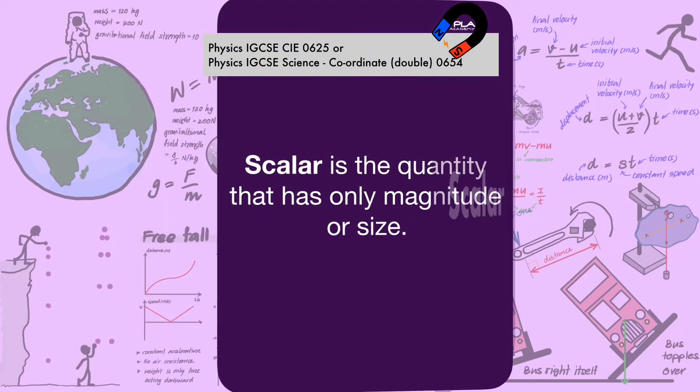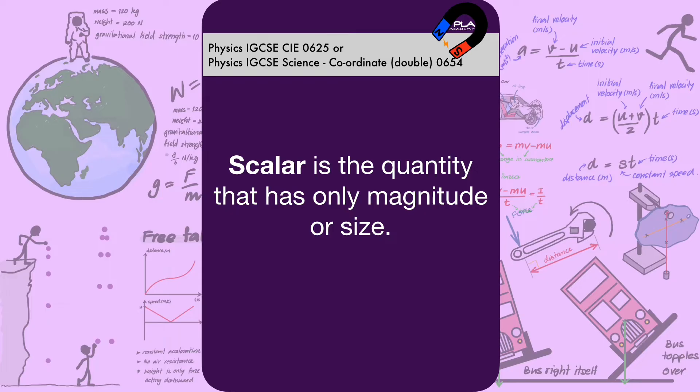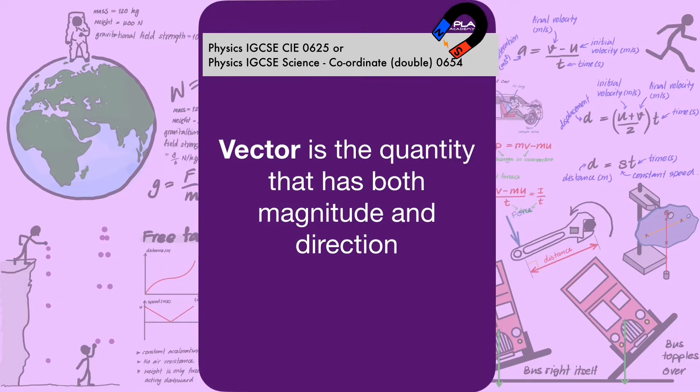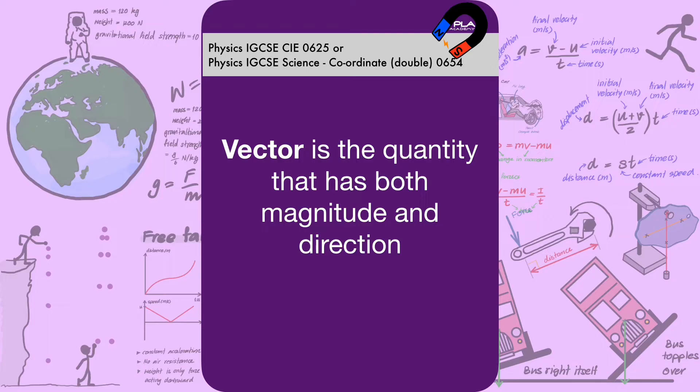Scalar. Scalar is the quantity that has only magnitude or size. Vector. Vector is the quantity that has both magnitude and direction.